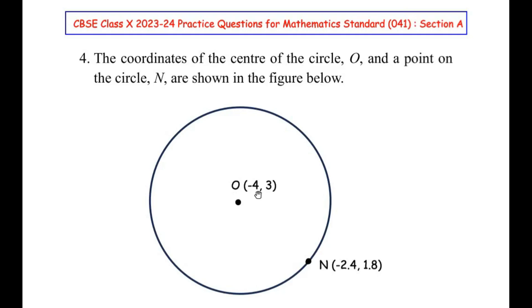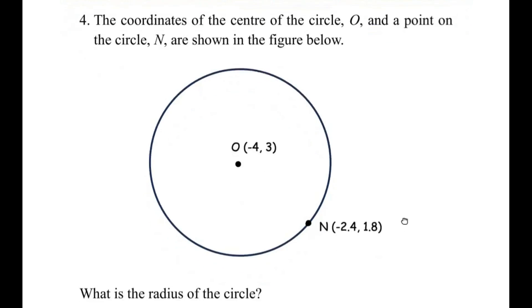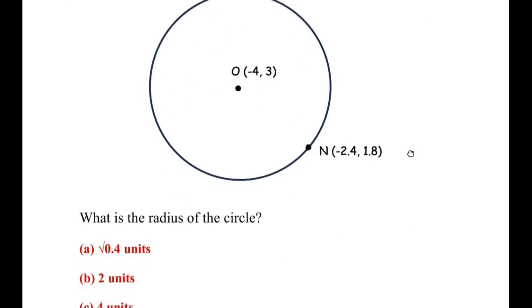We can see that the coordinate of the center O is given as (-4, 3), and there is a point N on the circumference of the circle with coordinates (-2.4, 1.8). What is the radius of the circle?